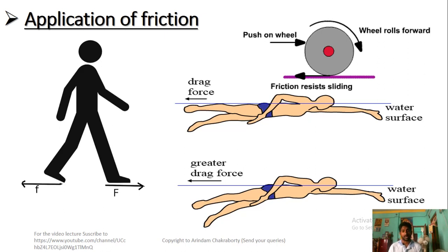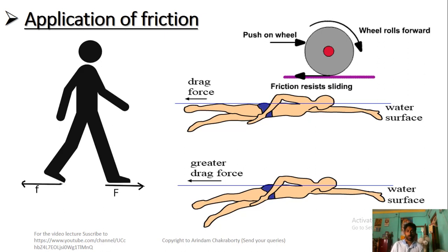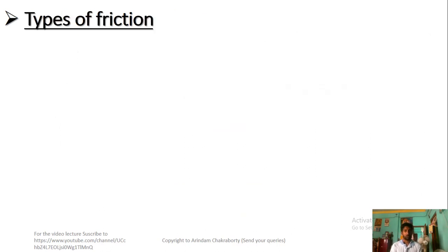Frictional force is beneficial for us, but sometimes it is not, because friction generates heat. That unnecessary heat can, however, be useful in applications like welding. So there are pros and cons to both static and dynamic friction. The types of friction are: static friction, sliding friction, and rolling friction.